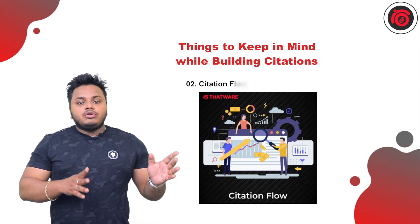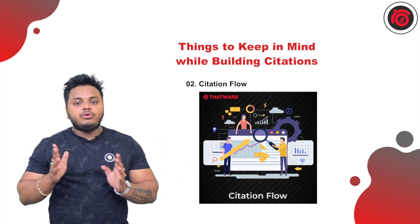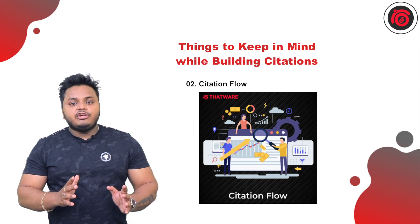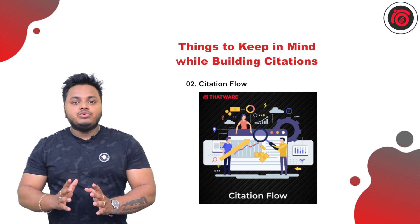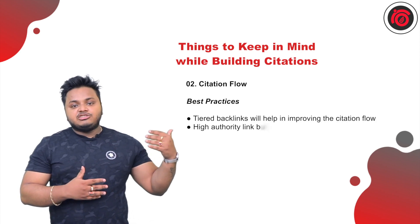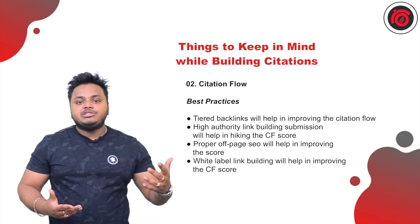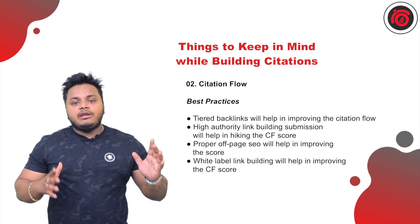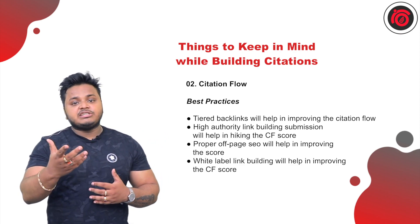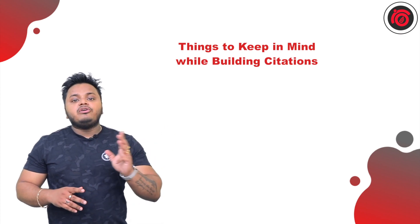Factor number two: Citation Flow, or CF. This is also a score between 0 to 100, and it represents the quantity of the backlinks which are pointing to your given campaign. As you can see from the screen, these are the best practices by which you can improve, implement, acquire, or increase your citation value for your campaign.